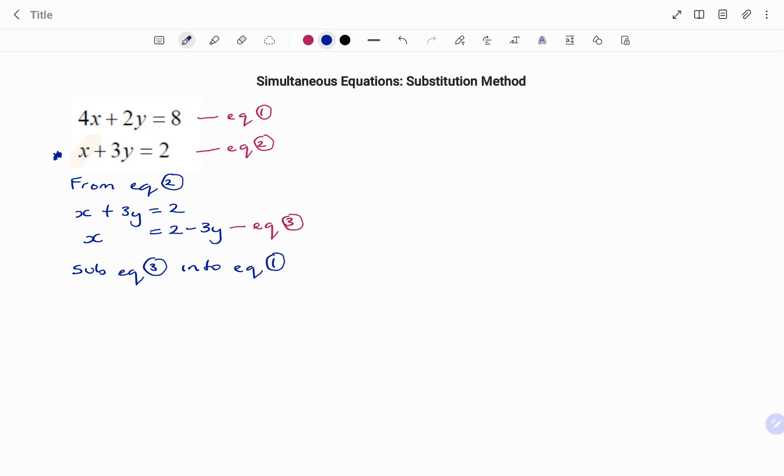Therefore, every occurrence of x in equation 1, I substitute with 2 minus 3y. My new equation becomes, I have 4 times (2 minus 3y) plus 2y equals 8.